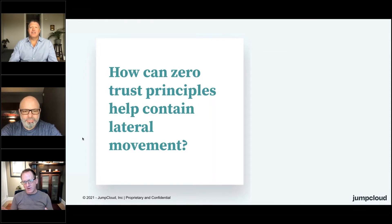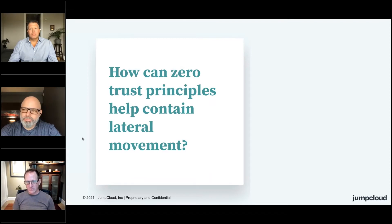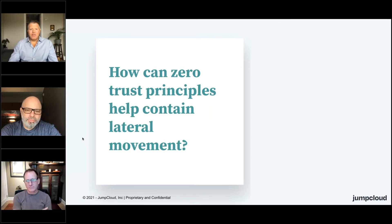And now, kind of a bookend — we talked about lateral movement. What's the most obvious way zero trust helps us solve some of these lateral movement issues? Just micro segmentation, network segmentation, and behavioral anomaly detection would allow you to contain a threat that's misusing a protocol for moving laterally.